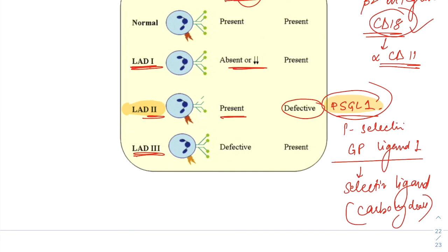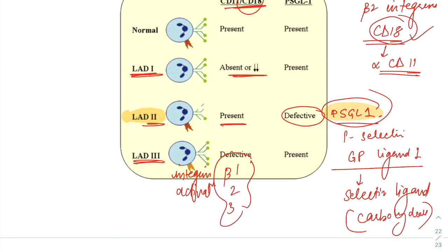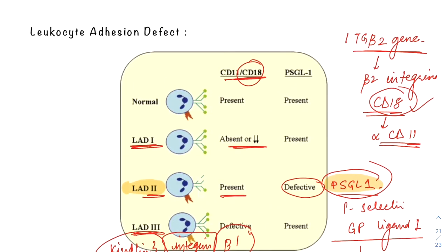LAD type 3 involves a defect in beta-1, -2, and -3 integrin types, which impairs the integrin activation cascade. The defective integrin activation is caused by a mutation in the kindlin-3 gene. So LAD type 3 is caused by defective beta-1, -2, -3 integrins and resultant defect in integrin activation due to a defective kindlin-3 gene.